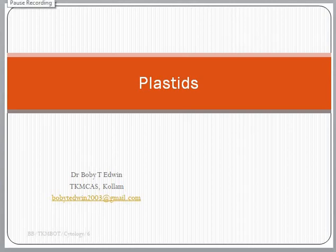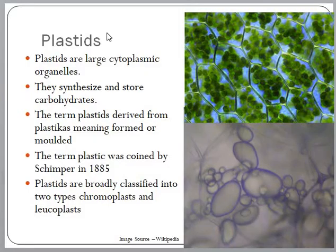In this class, we will discuss about plastids. When we think about plastids, I like to draw your attention to the green color of leaves and the coloration of leaves during autumn season. These colorations are often caused by some pigment molecules, and the pigment molecules are present within the organelles called plastids.